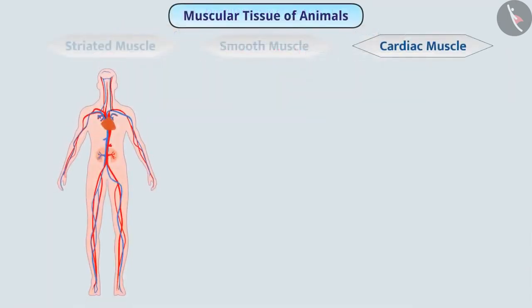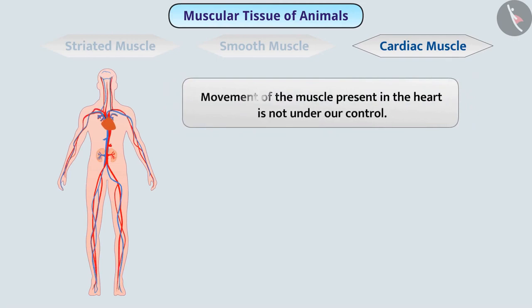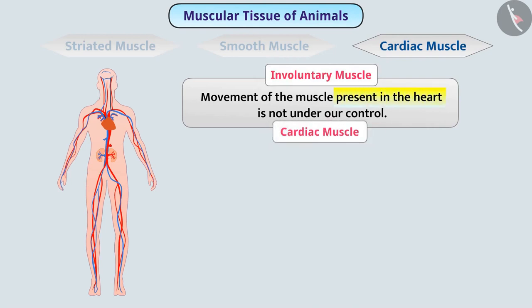In our body, the heart beats continuously. Muscles present in the heart contract and relax rhythmically throughout life, due to which the heart is able to pump blood. The movement of the muscle present in the heart is not under our control; therefore, it is an involuntary muscle. Since this involuntary muscle is present in the heart, it is called cardiac muscle.